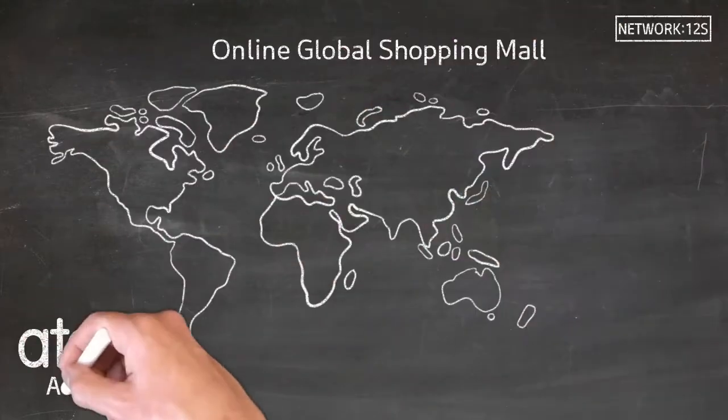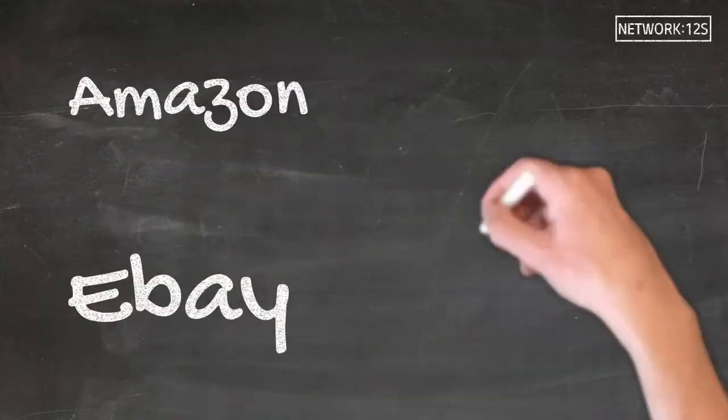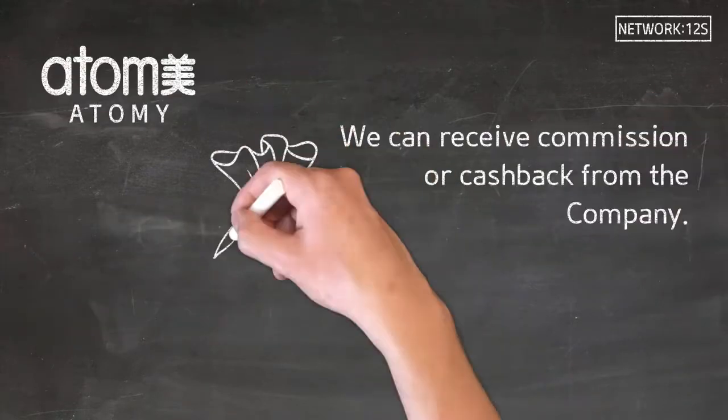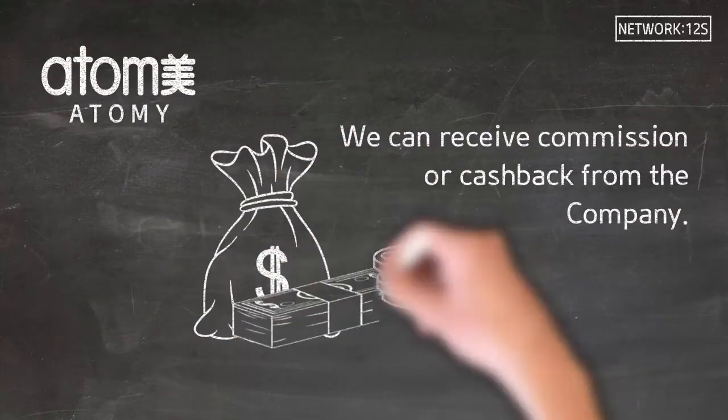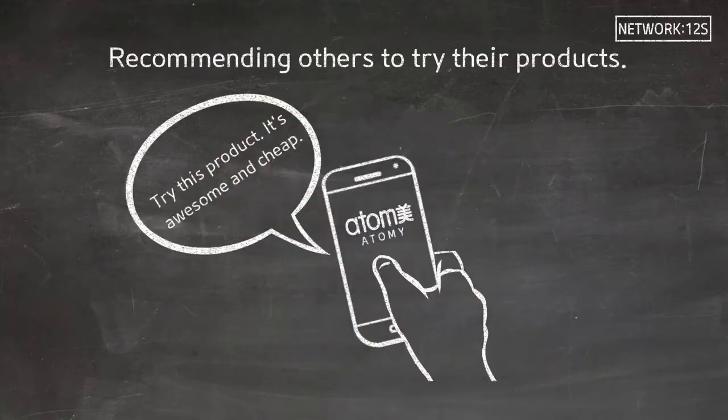Atomy is a global online shopping mall, like Amazon, eBay, or Kogan. But with Atomy, we can receive commission or cashback from the company by recommending others to try their products.